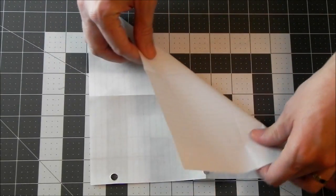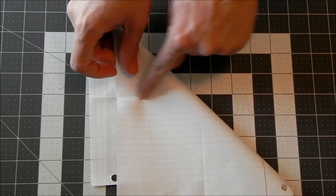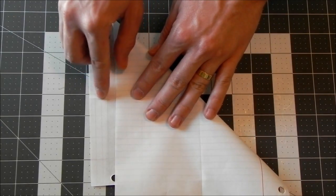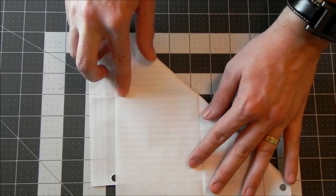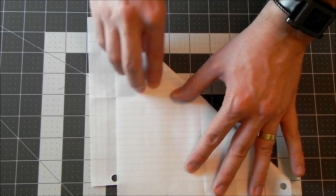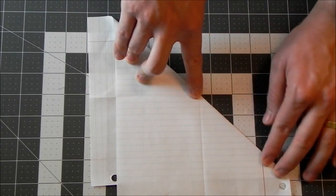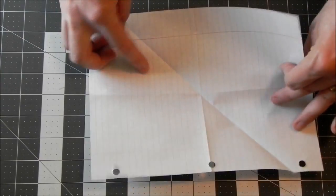So the easiest way that I find to do this is just line up this fold with that fold and make sure that you're going through the center of the paper. Try to get that as even as possible. And then we'll unfold.